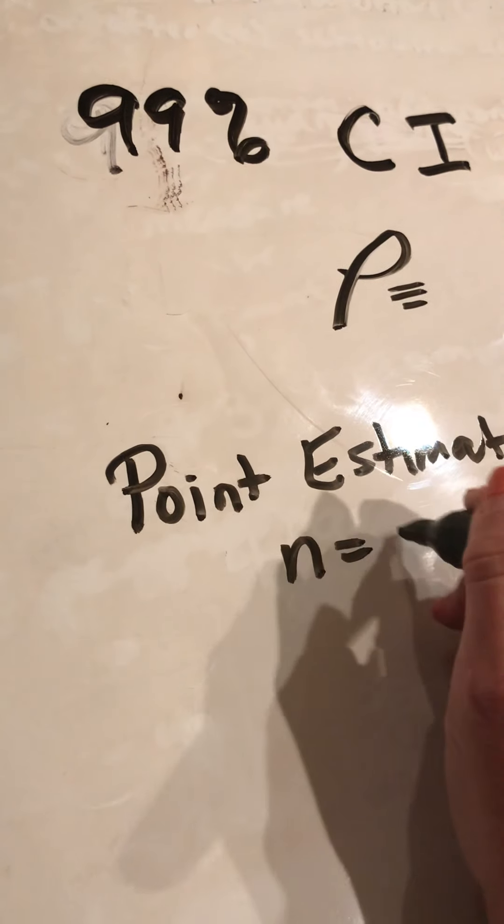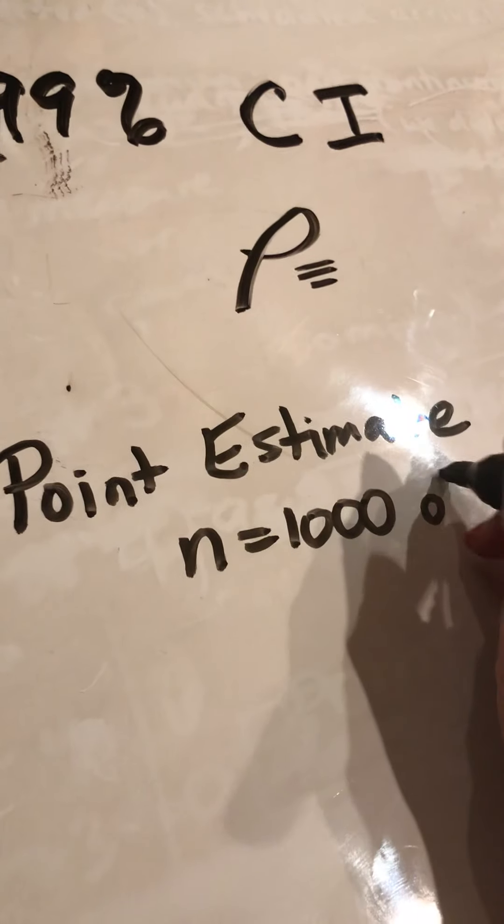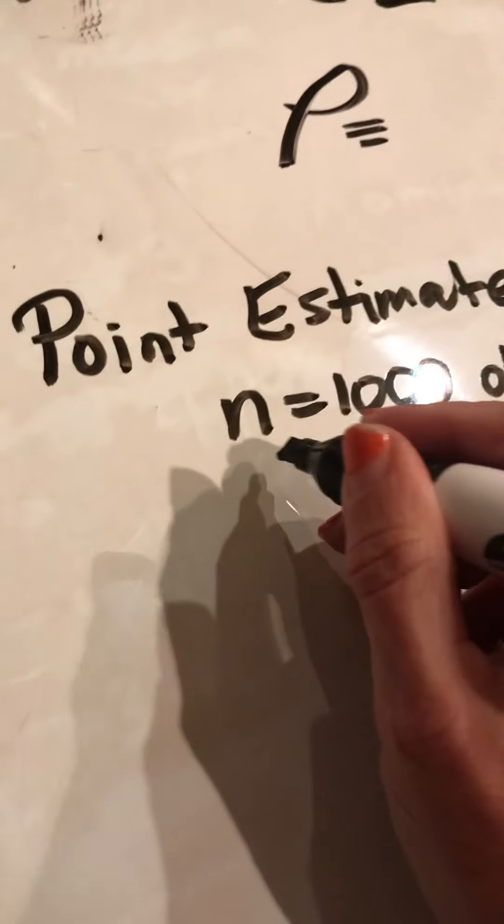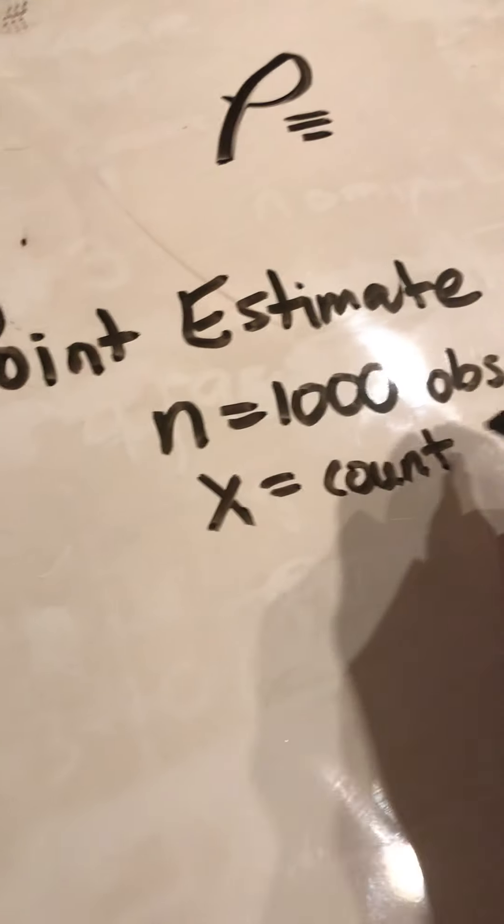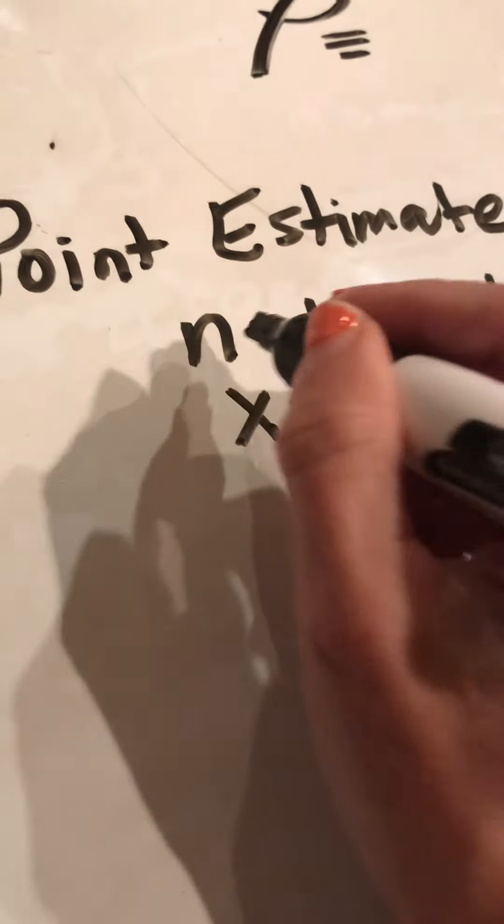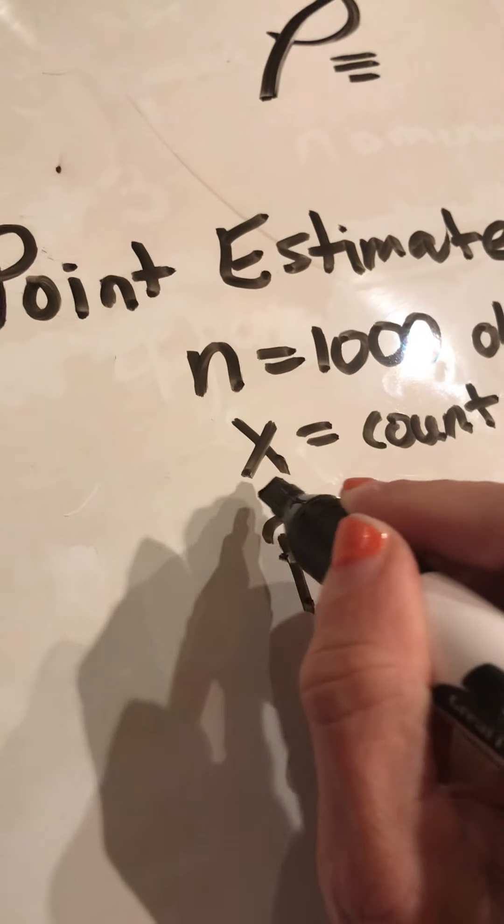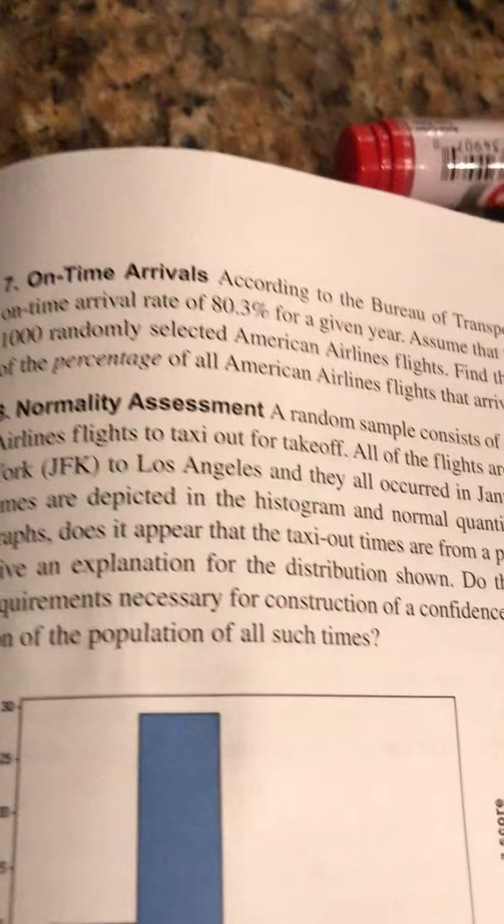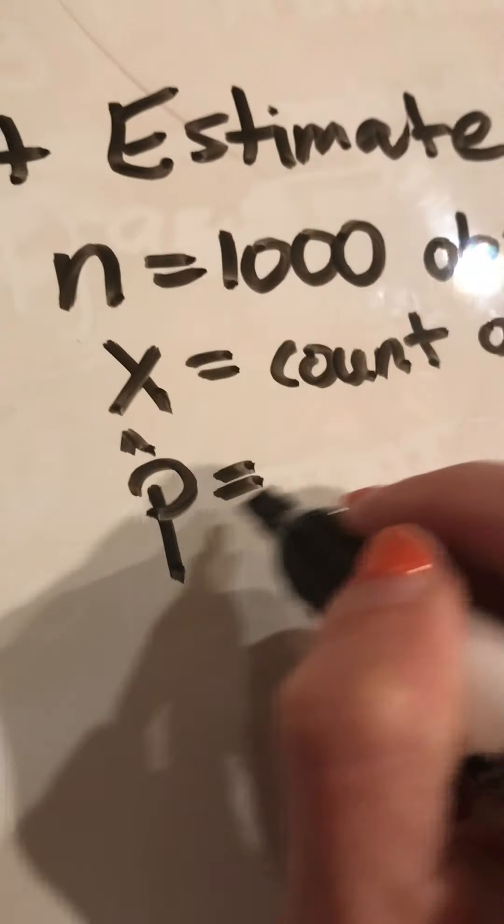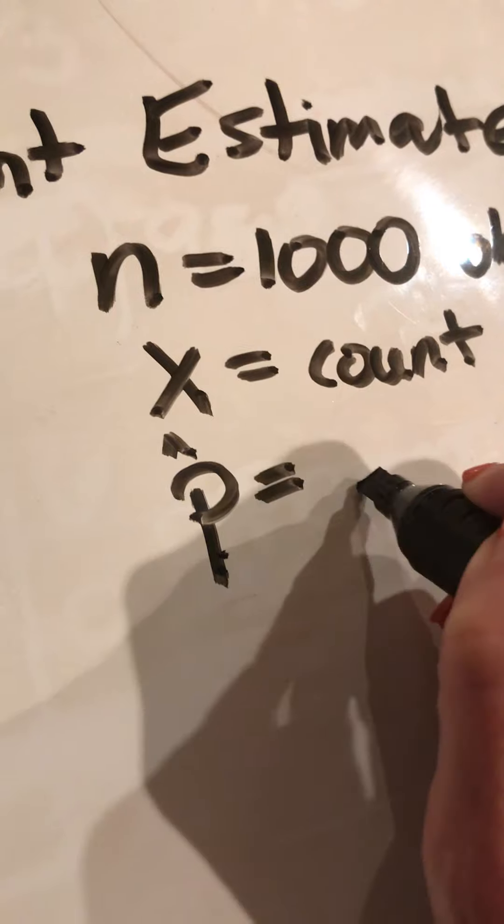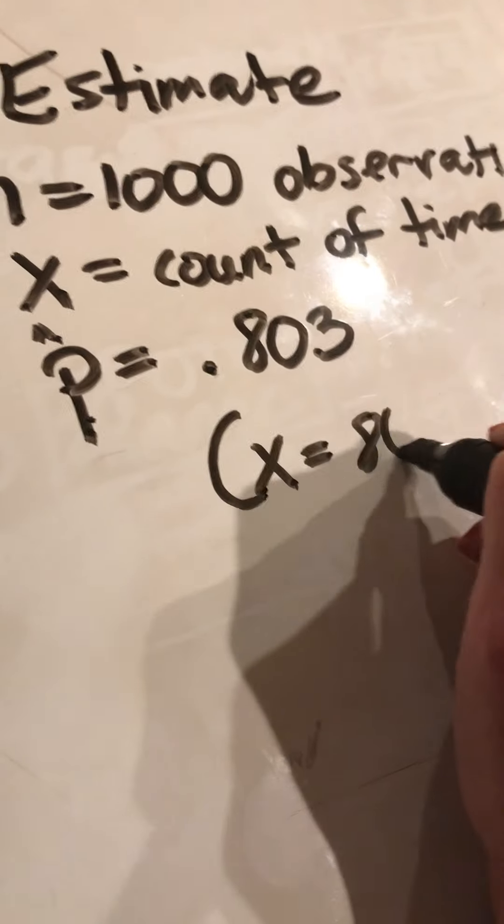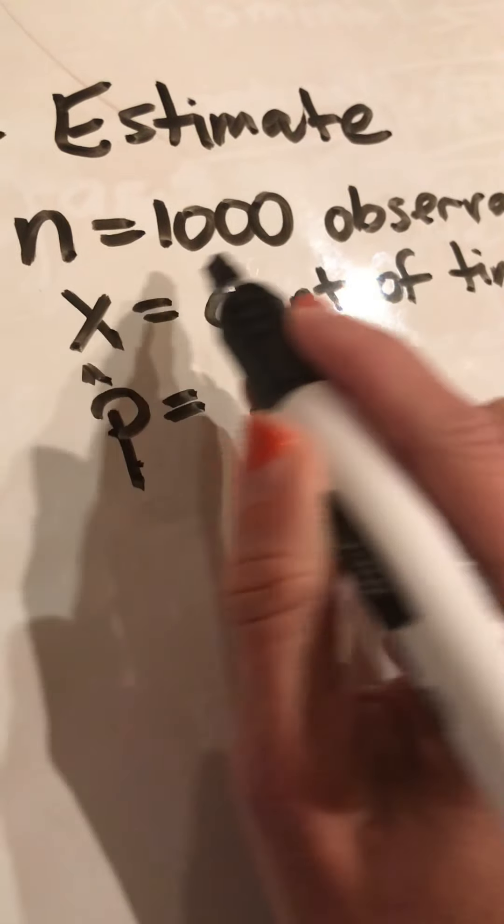So our point estimate is going to come from one sample. I showed you that they took 1,000 flights. And so 1,000 observations in the study. And counted, let's let x equal the count of on-time. That's going to be my success. From this, they told me that when they did count, they didn't tell me how many out of 1,000. Instead, they gave me 80.3%. So my sample P is 0.803. Technically, that means that they found 803 out of the 1,000 planes that were on time.